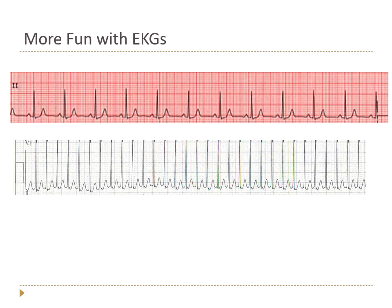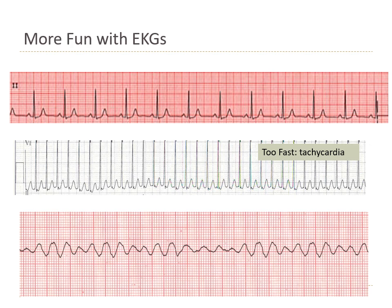Here's another example — a really fast heartbeat with many beats in the same amount of time. That's called tachycardia. If the heart rate is too fast, it's tachycardia; if it's too slow, it's called bradycardia.